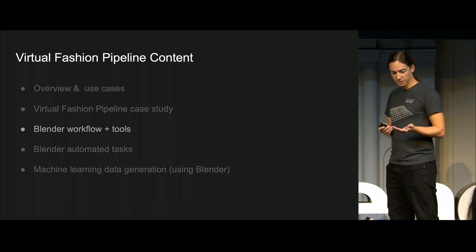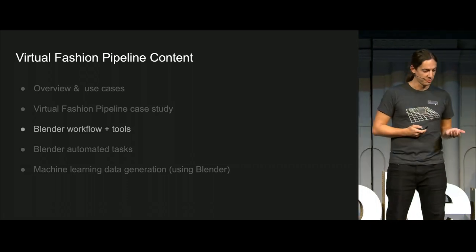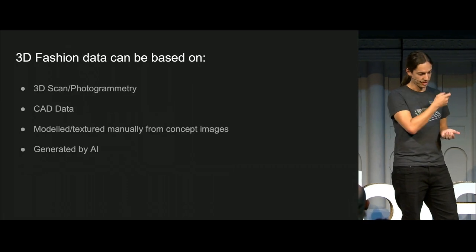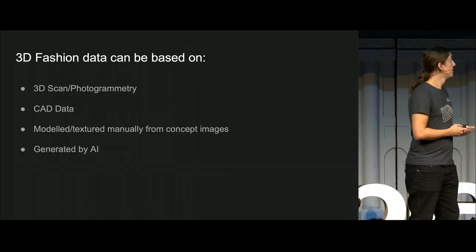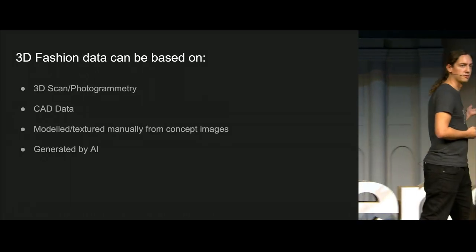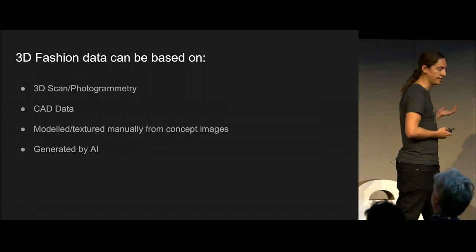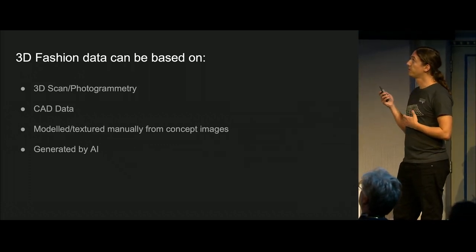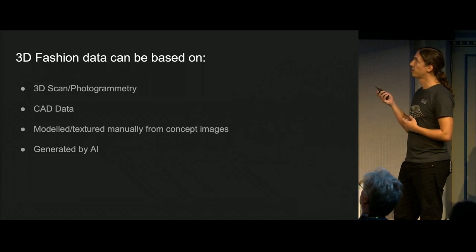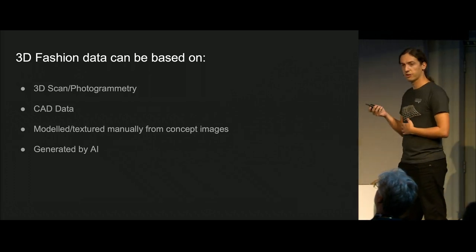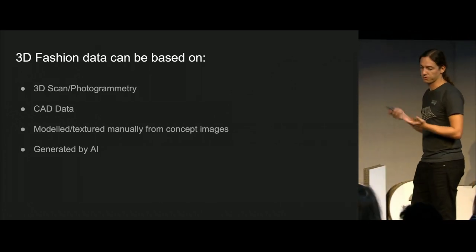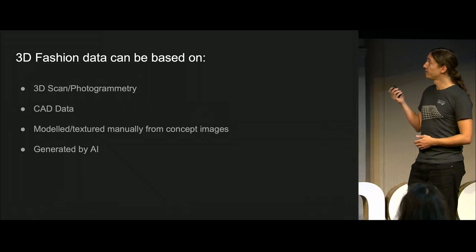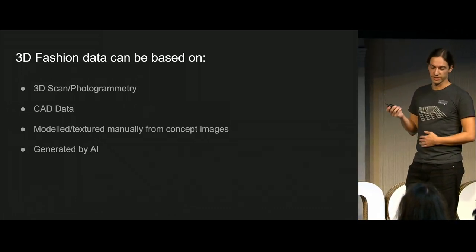Let's get to the meat of it — how we are using Blender. The basic sources for fashion data we can get are photogrammetry data, CAD data, models textured manually from concept images or photos, and 3D data generated by AI.